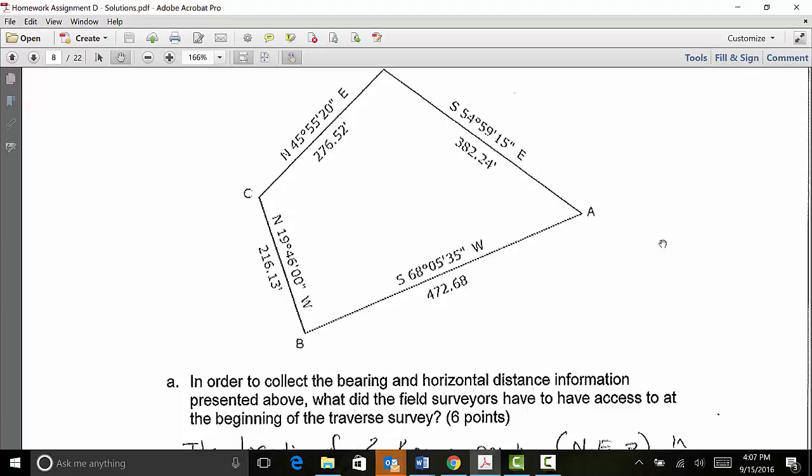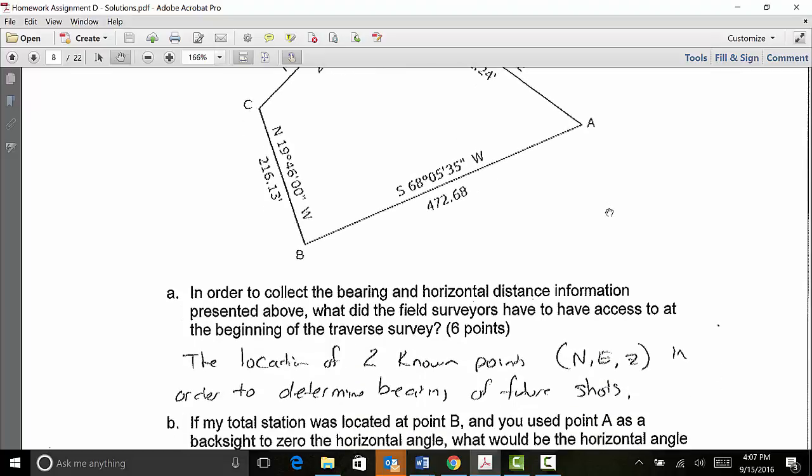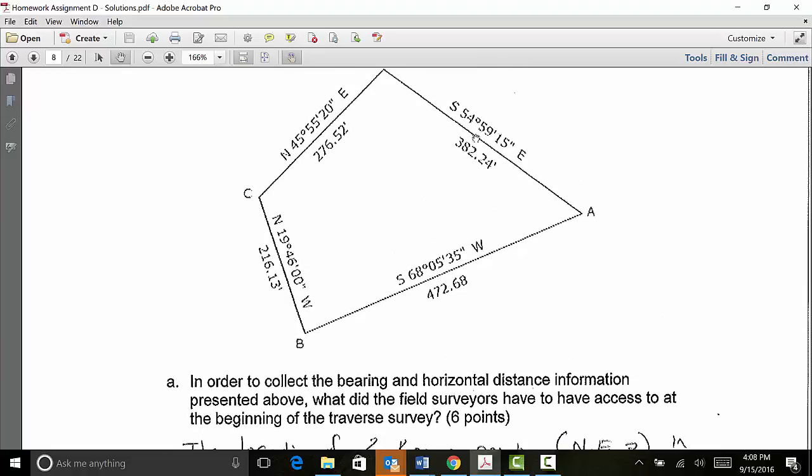The first question is, in order to collect the bearing and horizontal distance information presented above, what did the field surveyors have to have access to at the beginning of the traverse survey? In other words, this data here didn't magically appear. It's based on collecting data in the field. And in order to do that, in order to be able to determine bearings and horizontal distances, you first had to start with two known control points. Because I can't shoot from A to B and know it's a south 68 degree bearing, southwest 68 degree bearing, if I didn't know, if I wasn't able to measure this with respect to some known bearing. So the answer here is, and this is the case in any survey, I have to begin with two known points.